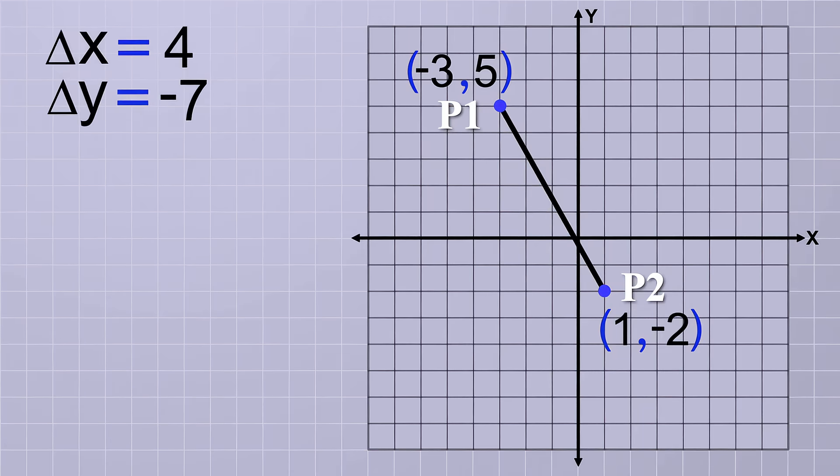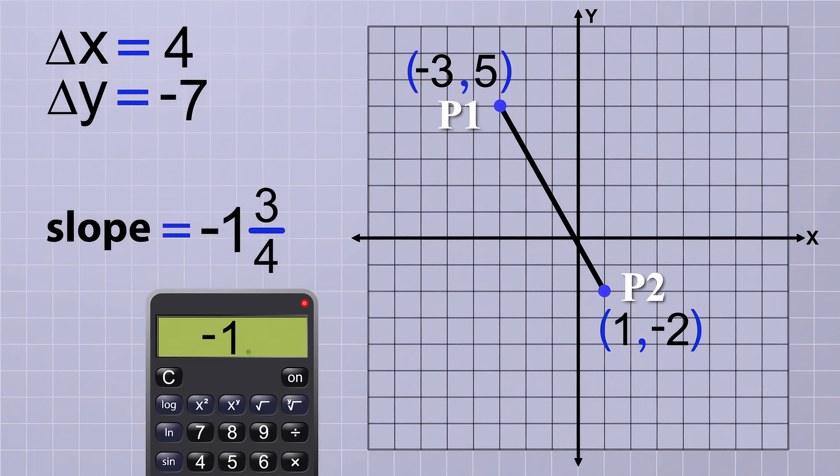Now that we have the deltas, let's plug them into our equation for slope. Slope equals delta y over delta x, which would be negative 7 over 4. We could just leave the slope like that as an improper fraction, but we could also convert it into a mixed number form or get the decimal value with the calculator, which is negative 1.75.